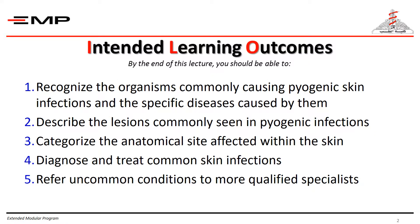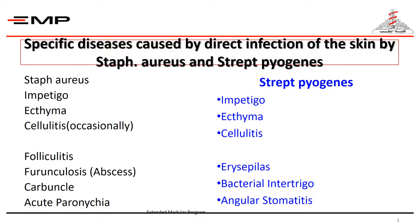These are our intended learning outcomes as we discussed in part one. As a reminder, these are the specific diseases caused by direct infection of the skin by Staph aureus and Strep pyogenes. Impetigo contagiosum, ecthyma, and cellulitis are caused by both Staph and/or Strep. Folliculitis, furuncle, carbuncle, and acute paronychia are caused only by Staph, while erysipelas, bacterial intertrigo, and angular stomatitis are caused by Strep pyogenes only.